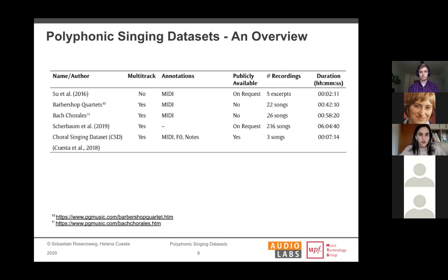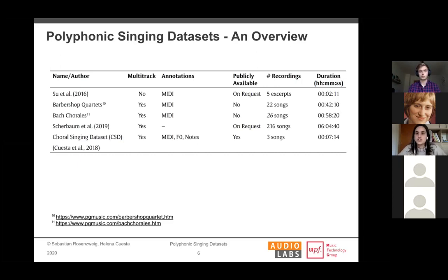The Barbershop Quartets and Bath Chorales datasets are both multi-track datasets with recordings of four singers. They contain MIDI annotations and F0 annotations automatically extracted for each voice of the quartet. They have 20, 22, and 26 songs each and are quite large by comparison. However, they are not publicly available because they come from a commercial application.